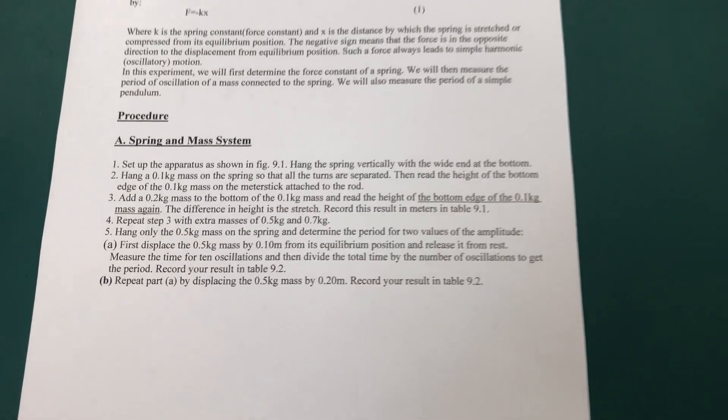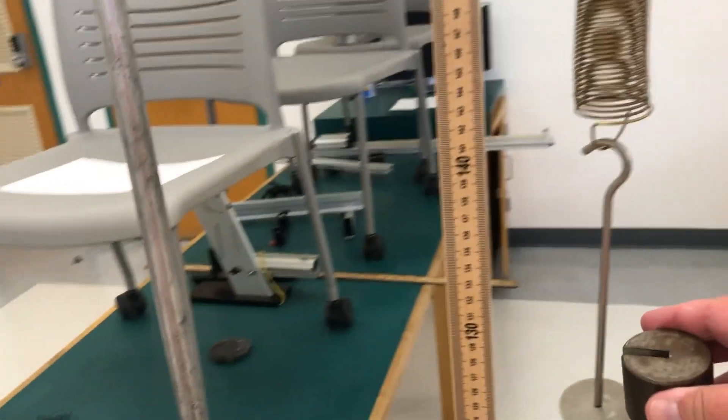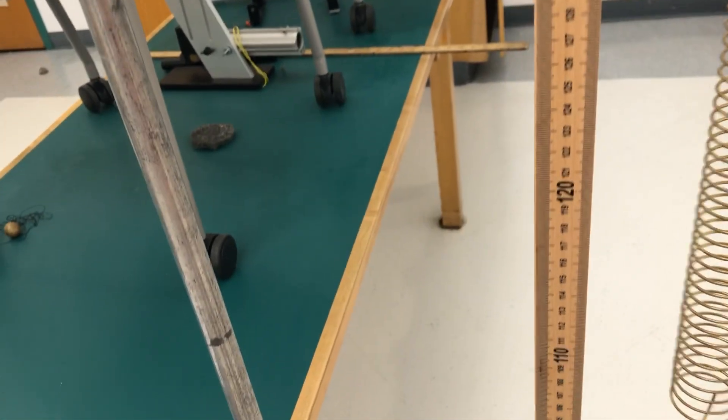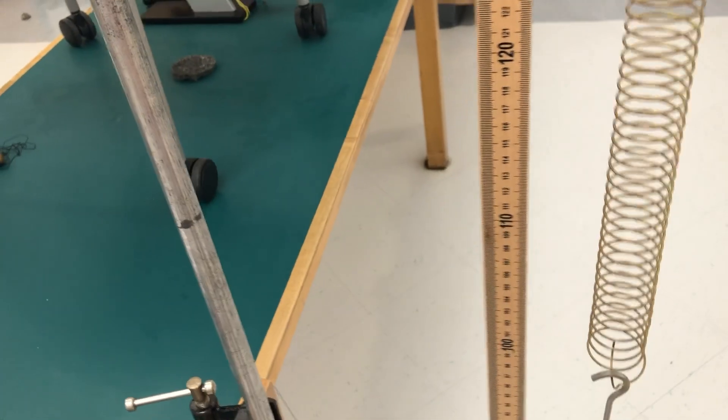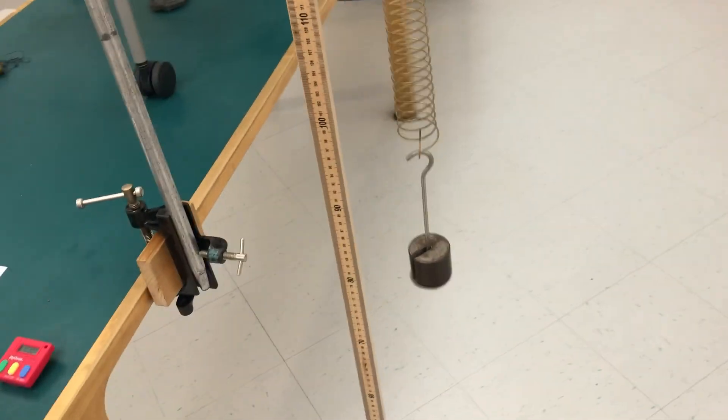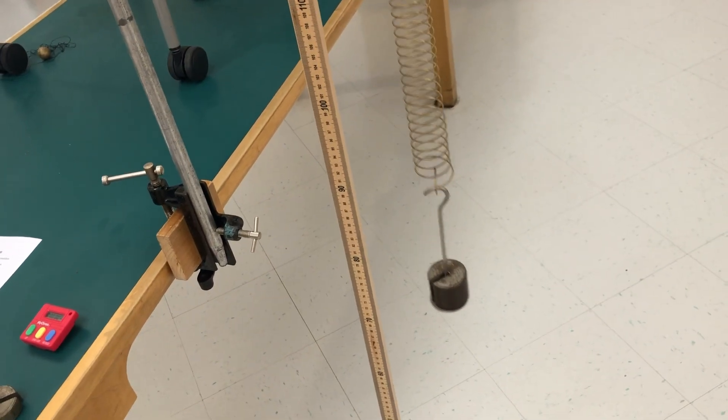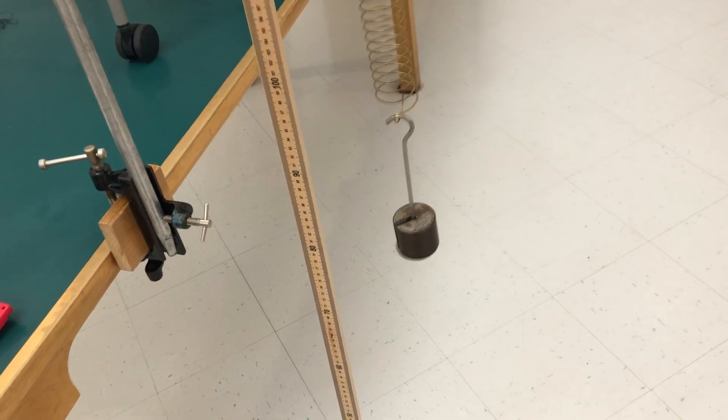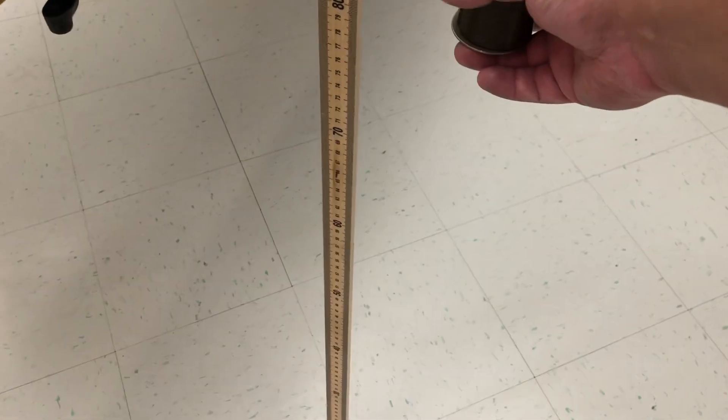I'm going to put on 0.5 kilograms. Don't forget there is a 50 gram hanger, so the total mass now hanging is 550 grams. Let's create an equilibrium.